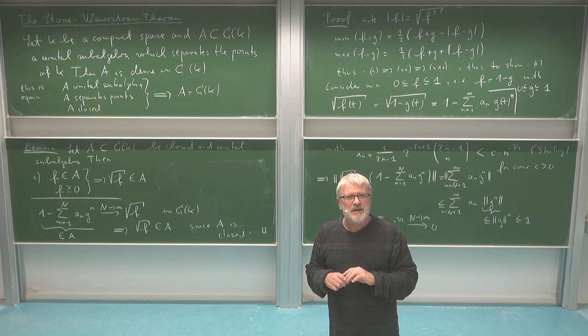We will come back to these things later when we talk more generally about Banach algebras, where we very often do such analytic expansions and this allows us to show that we have many elements in our Banach algebra. Here we are doing it very concretely for the square root. Equipped with this lemma, we can now really go to the proof of Stone-Weierstrass.